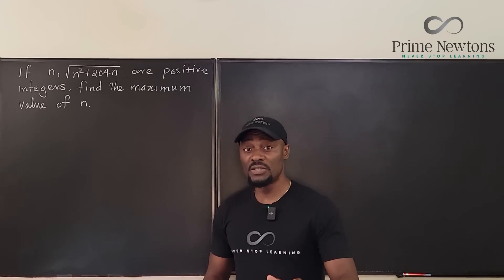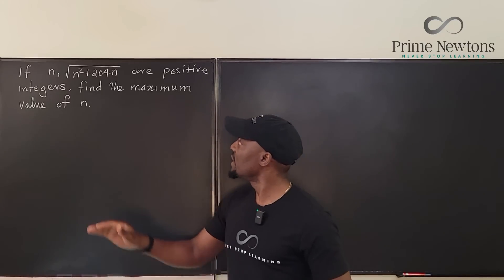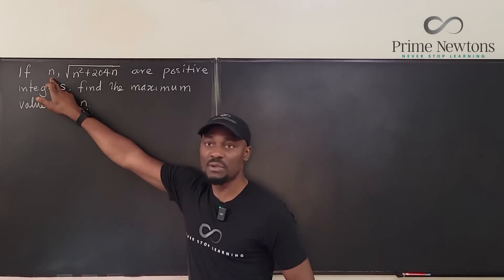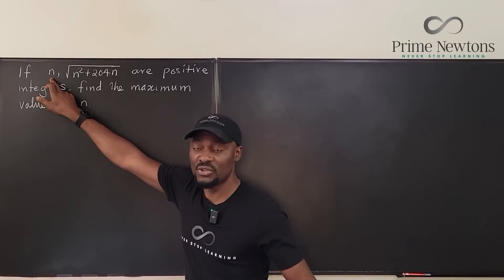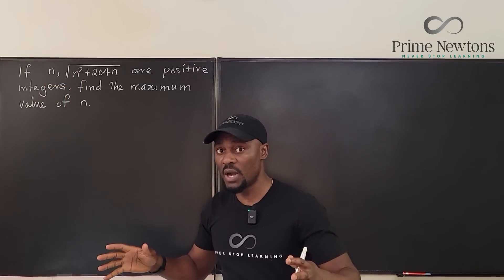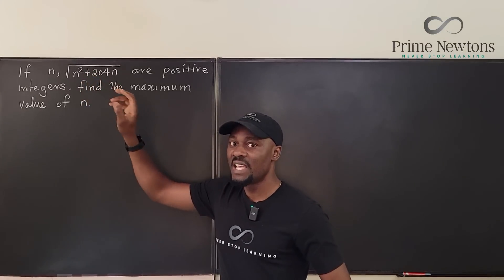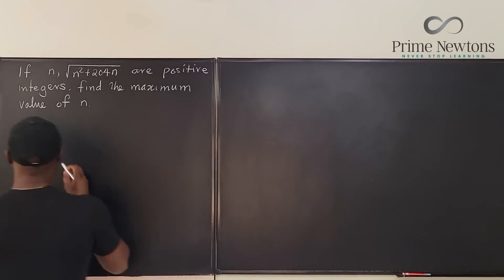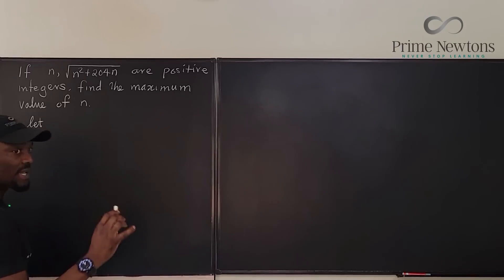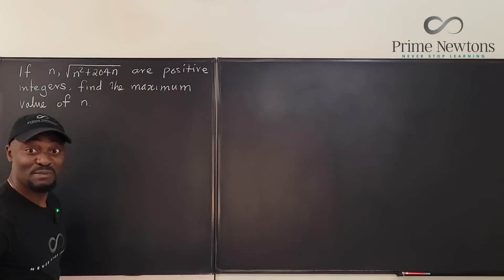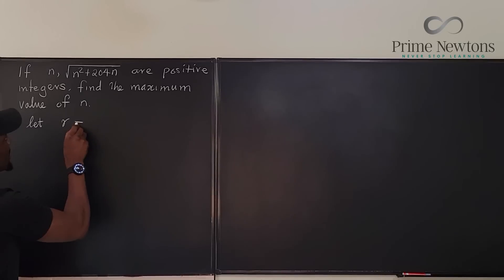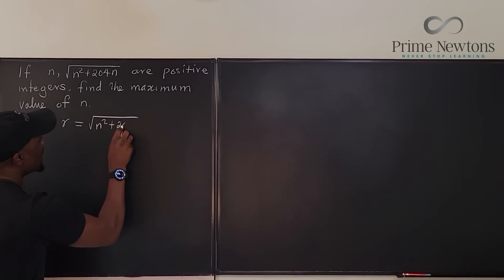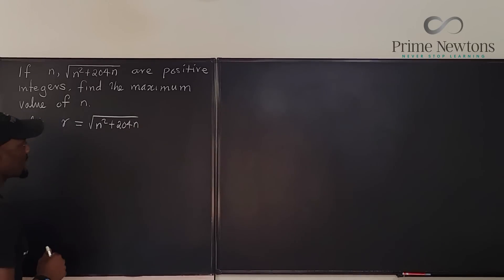The first thing is to understand what we're being asked to find. We're supposed to find the maximum value of n. There's no maximum value to a positive integer, but this constraint tells us what we should work on. We're told that this is a positive integer. So let r be equal to the square root of n squared plus 204n.